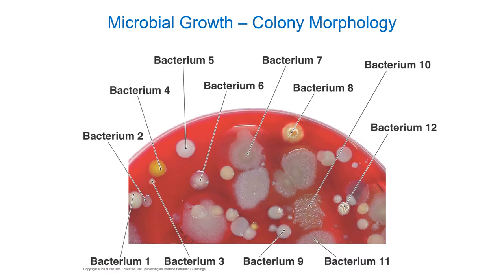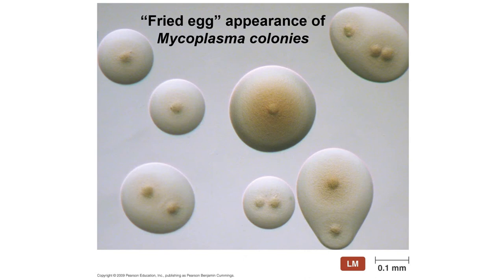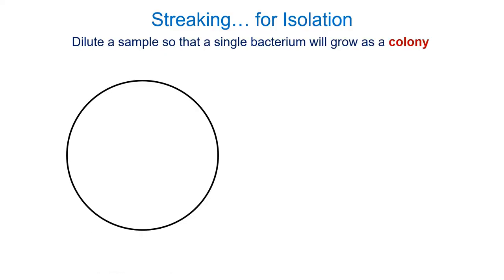On a plate, we can see at least 12 different species of bacteria based solely on the characteristics of the colonies they formed. The macroscopic characteristics of a colony can be diagnostic — for instance, members of Mycoplasma have a really interesting fried egg appearance. Imagine being presented with a mixed culture of bacteria — several genetic strains or several species mixed together — and needing to isolate different bacteria to grow pure cultures.